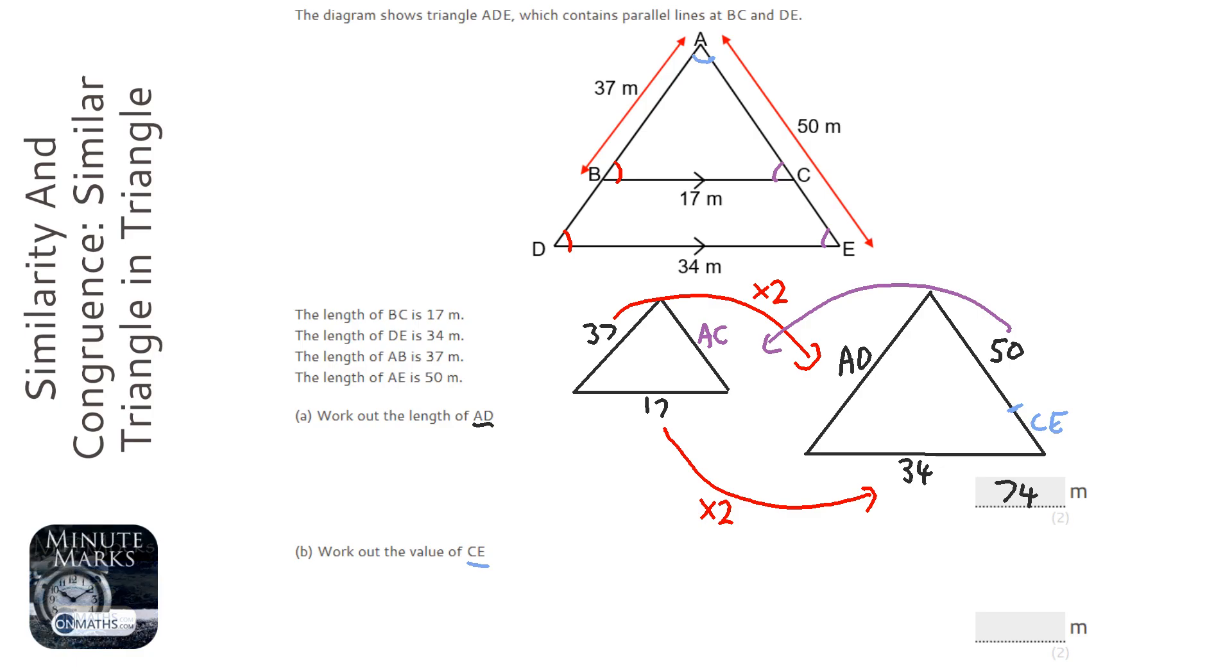So to go from the big one to the small one, instead of timesing by the scale factor, I'm going to divide. So I'm going to divide it by 2. So AC is 25.